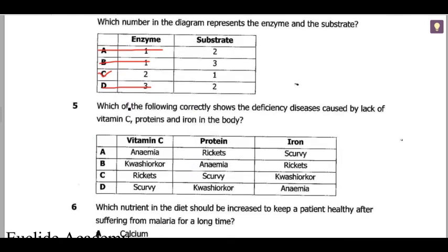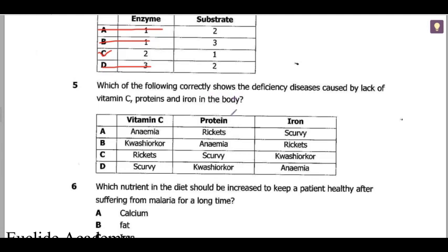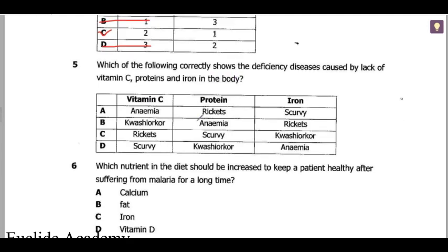Question 5: which shows a deficiency disease caused by lack of vitamin C, proteins, and iron in the blood? We know protein deficiency causes kwashiorkor, and iron deficiency causes anemia. Vitamin C deficiency causes scurvy. The other options are just distractors, which leaves D as the correct answer.